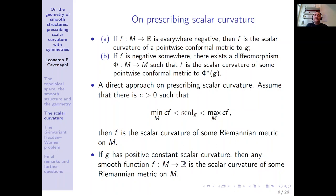Another related result is the direct approach on prescribing scalar curvature. Given a closed Riemannian manifold with metric G, with scalar curvature Scal(G), suppose you want to prescribe some smooth function F. It is known — also given by Kazdan-Warner — that if there exists some constant C such that a certain inequality is satisfied, then F can be prescribed as the scalar curvature for some Riemannian metric. Moreover, if G has positive constant scalar curvature, then any such function can be prescribed as the scalar curvature for some Riemannian metric on the manifold.